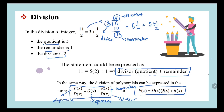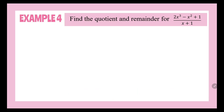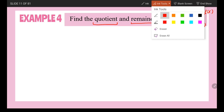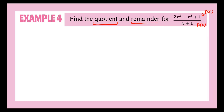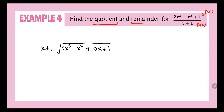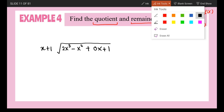To understand division, let's look at Example 4: Find the quotient and remainder for 2x cubed minus x squared plus 1 divided by x plus 1. They have given us P(x), which is the polynomial, and d(x), which is the divisor. They are asking us to find the quotient and the remainder. To find the quotient and the remainder, we need to use long division. We are going to write 2x cubed minus x squared. Since there is no x term, we write this as 0x plus 1, divided by divisor x plus 1.